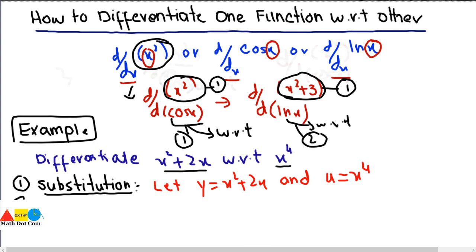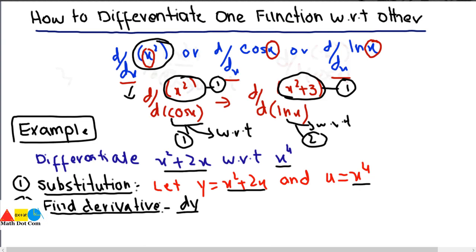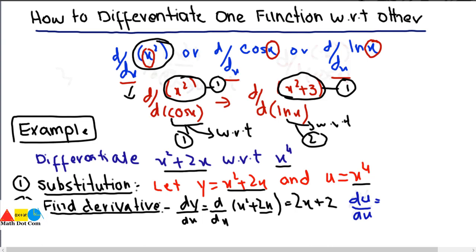Step number two: find the derivatives of both functions with respect to the variables involved. We differentiate y with respect to x: dy/dx = d/dx of (x² + 2x) = 2x + 2, using the power rule. Then we find du/dx = d/dx of x⁴ = 4x³, again using the power rule.